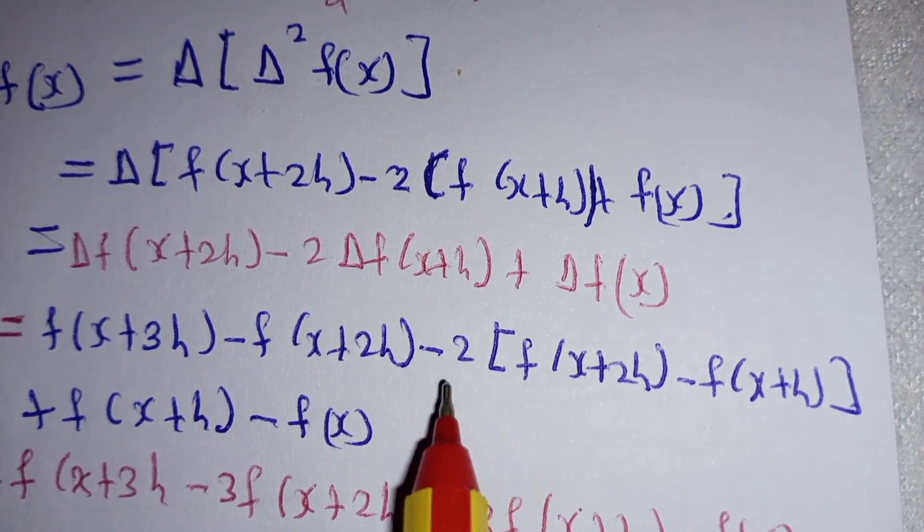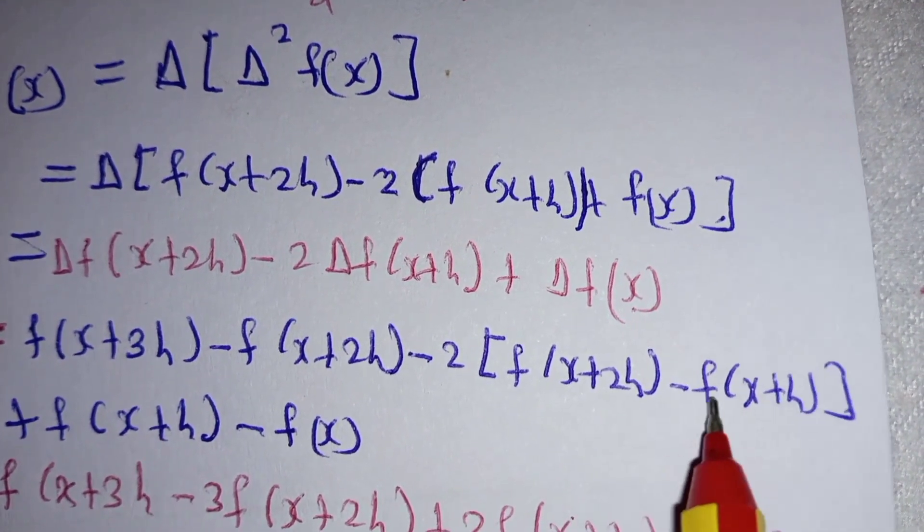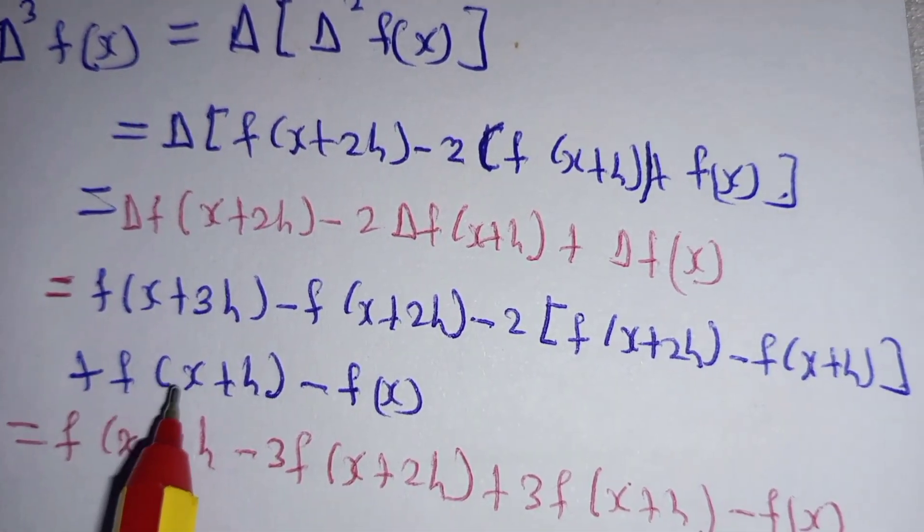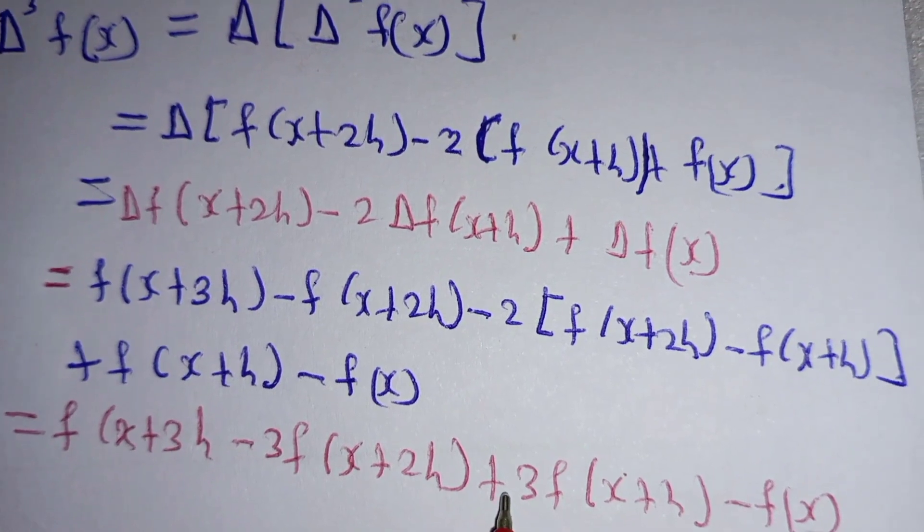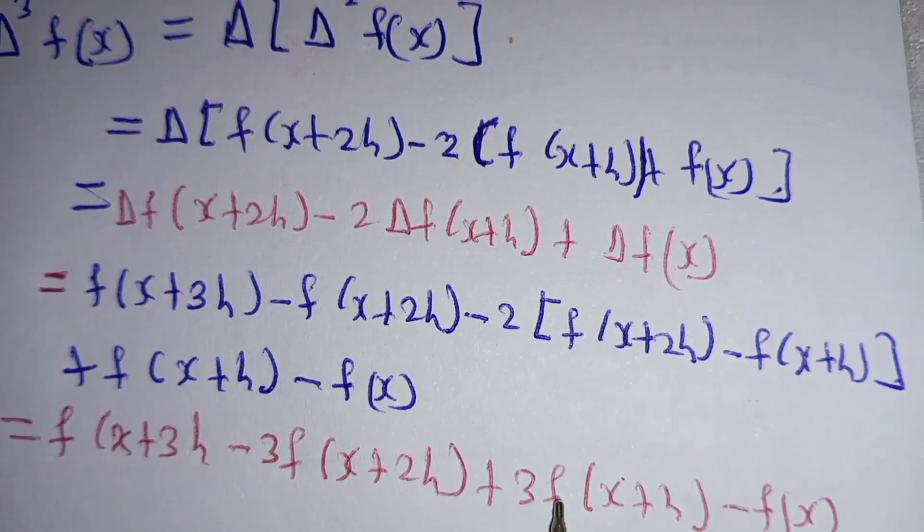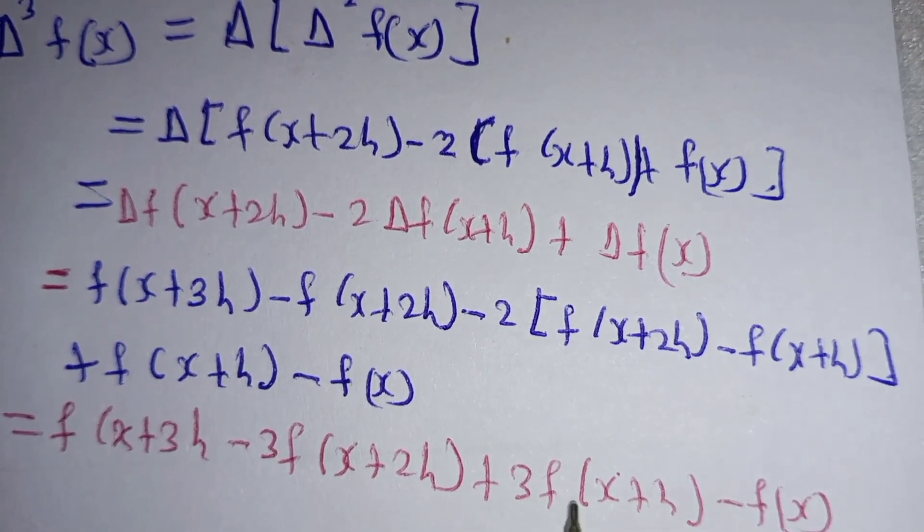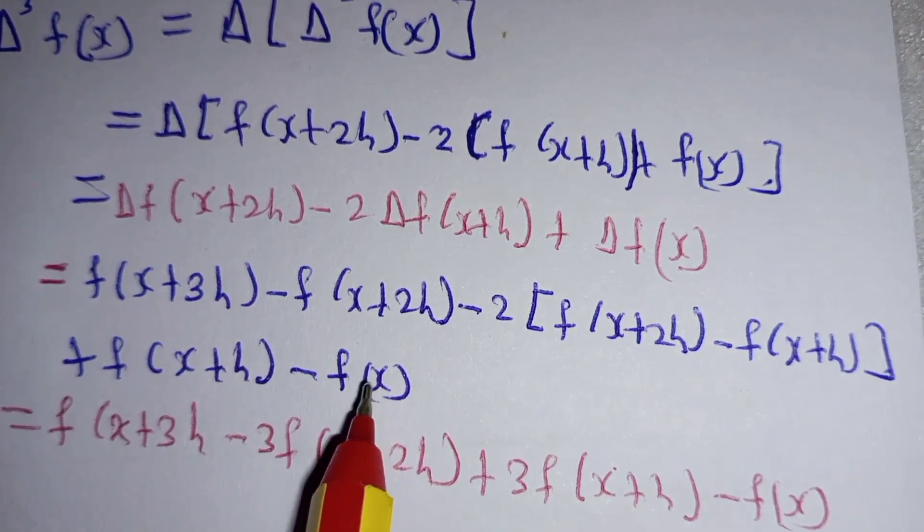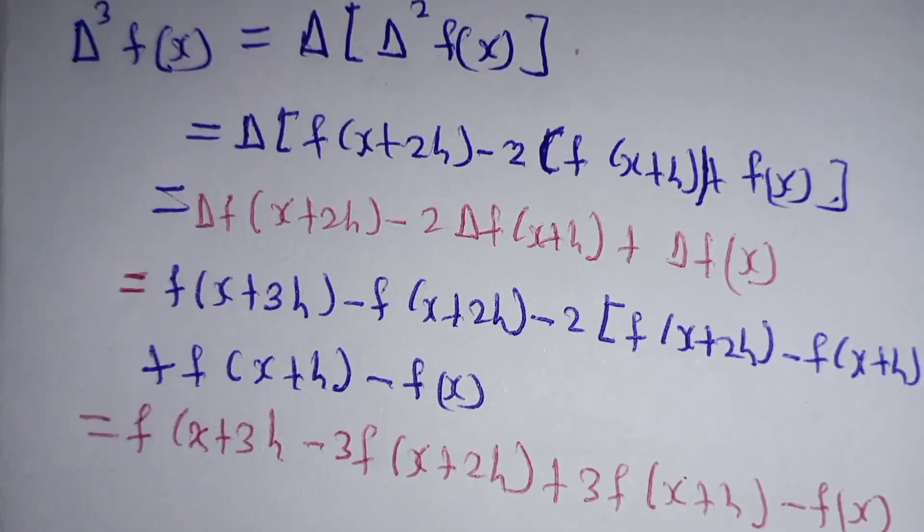Then we have -2 times -f(x+h), which becomes +2f(x+h), plus 1f(x+h), which gives us 3. So plus 3f(x+h), and finally minus f(x).